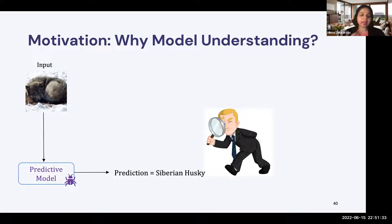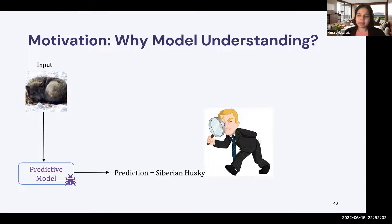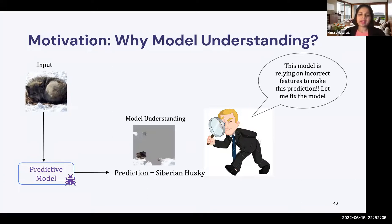For example, let's say we are looking at a predictive model which is potentially buggy. This model takes as input images of animals and produces predictions about what animal is in the picture. If we provide the input image of a Siberian Husky, the prediction coming out of this model is 'Siberian Husky.' So far everything looks good. But upon careful examination of how the model is generating this prediction — seeing what pieces of the image the model is focusing on — we might infer a lot more about what the model is doing.